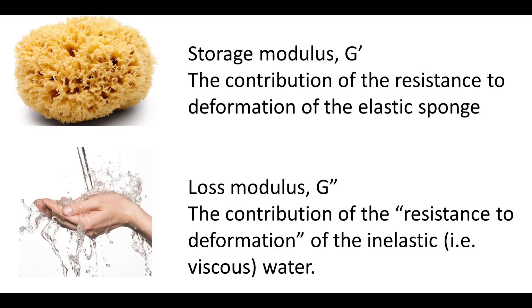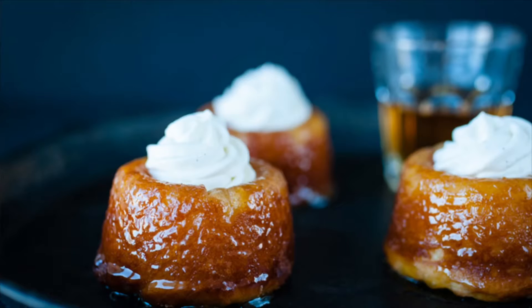The water also contributes to the overall resistance to deformation. And because water is inelastic, or what we call viscous, we can think about this contribution to the complex modulus as the loss modulus or the viscous modulus. Now imagine if we soaked the sponge in syrup or honey, or we used a stiffer sponge. In both cases the complex modulus would be higher as a result of the greater elastic or viscous contributions.